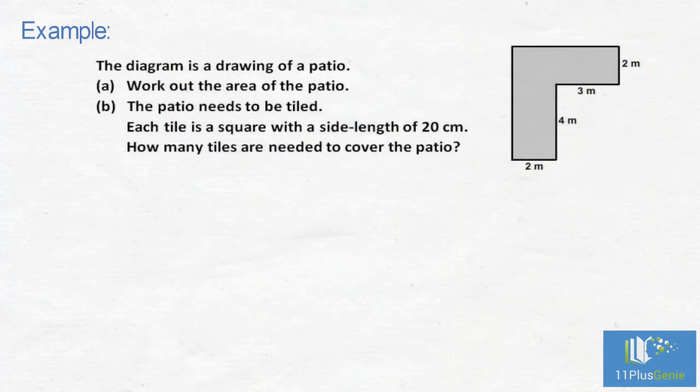Example: the diagram is a drawing of a patio. Part A: Work out the area of the patio. Part B: The patio needs to be tiled. Each tile is a square with a side length of 20cm. How many tiles are needed to cover the patio?